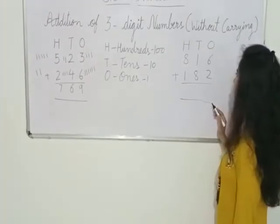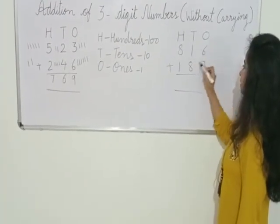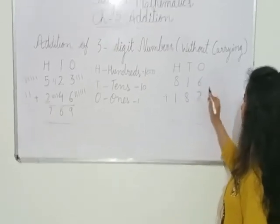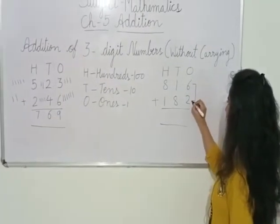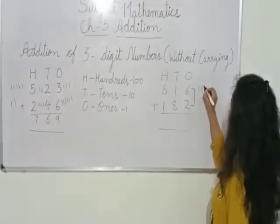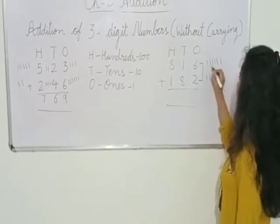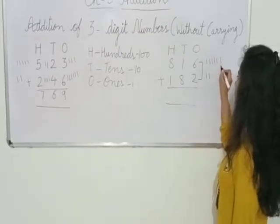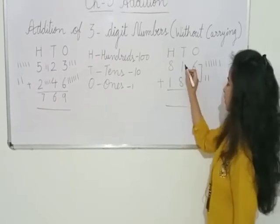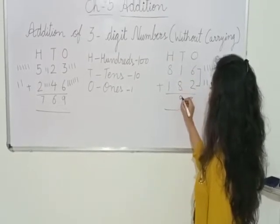Now let's take another example. Here we have 8116 and 1182. So first we will add the 1's place: 6 plus 2. First we will draw 6 lines: 1, 2, 3, 4, 5, 6. Here we will draw 2 more lines. 6 is already there — after 6, what comes? 7, 8. So we will write down 8 here. Here is 1 and 8. After 8 what comes? 9. So we will write down 9 here.